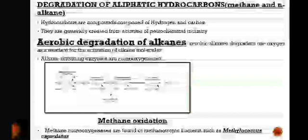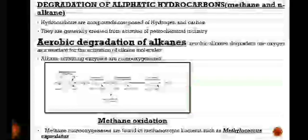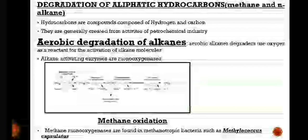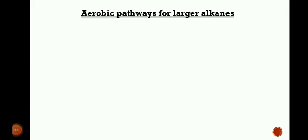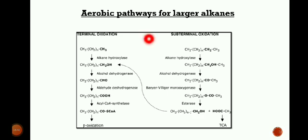Methane monooxygenase (MMO) plays an important role; it is an enzyme capable of oxidizing the carbon-hydrogen bond in methane as well as other alkanes. Methane monooxygenase belongs to the class of oxidoreductase enzymes, and methane monooxygenases are found in methanotrophic bacteria such as Methylococcus capsulatus.